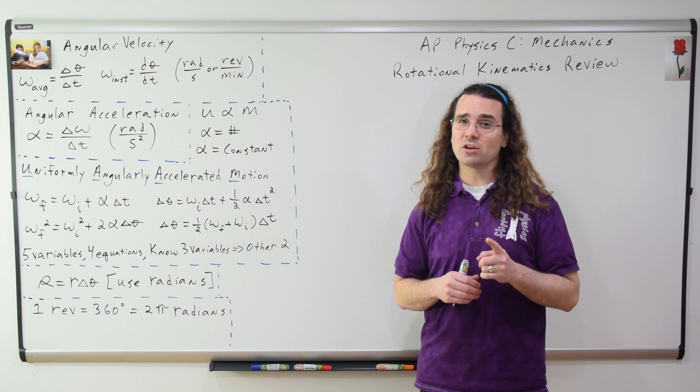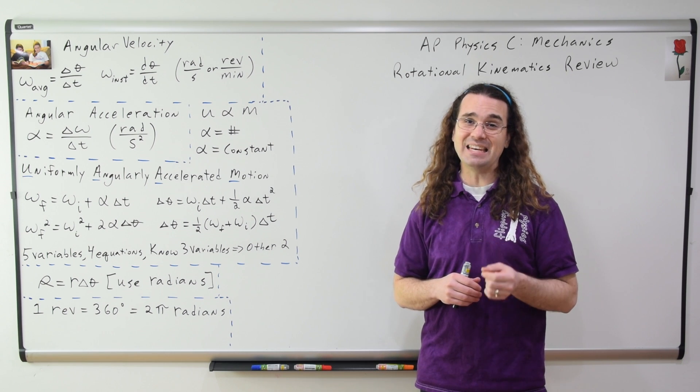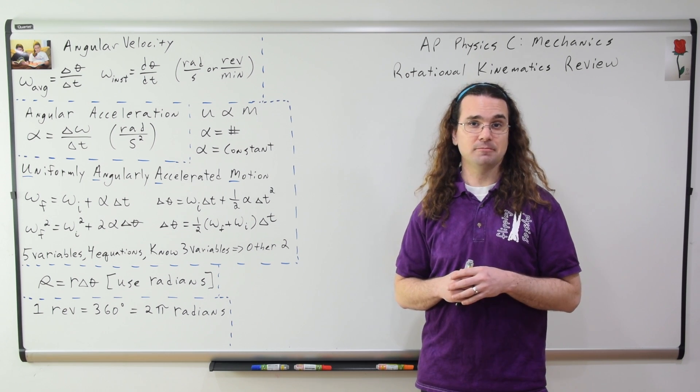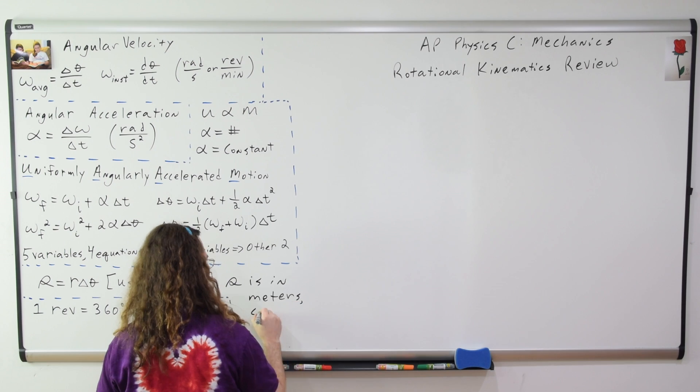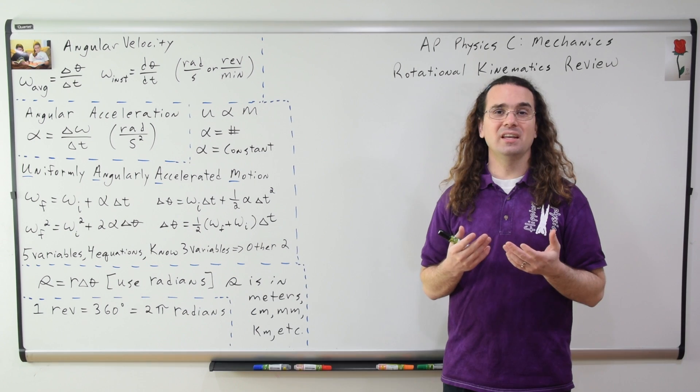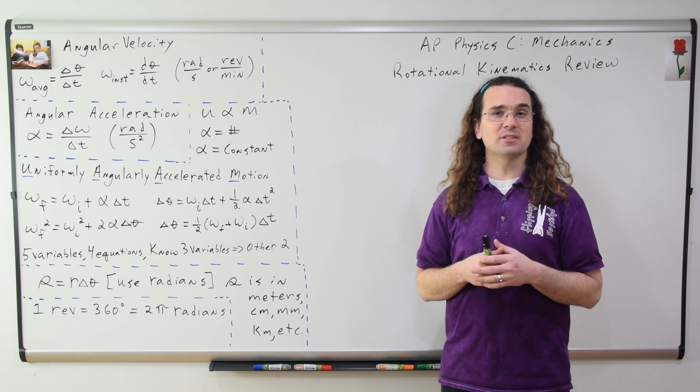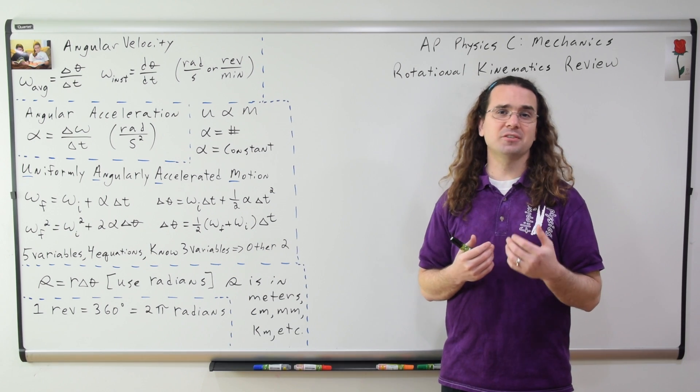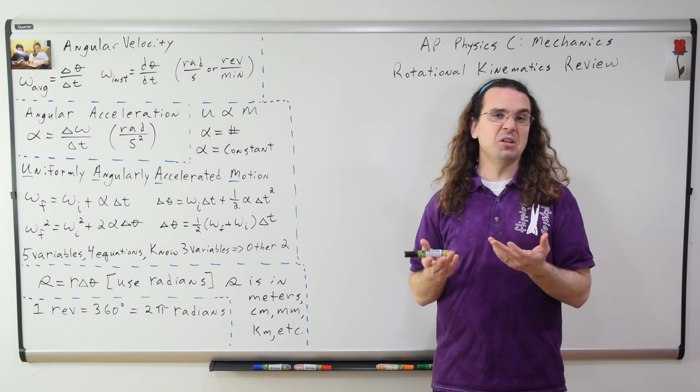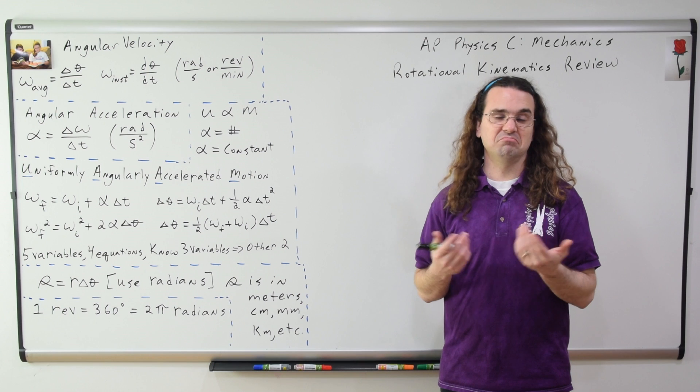One revolution equals 360 degrees which equals two pi radians. And because arc length is a linear measurement, it has linear units like meters, centimeters, millimeters, etc.